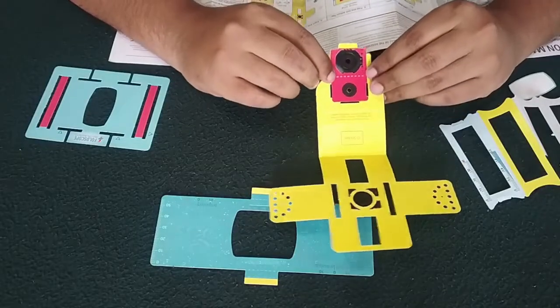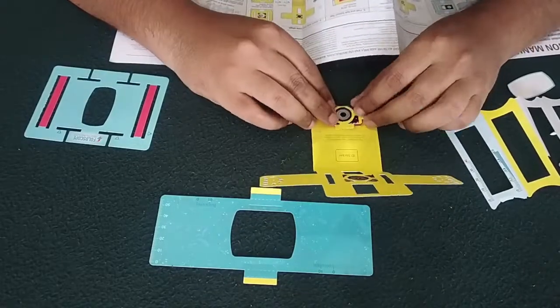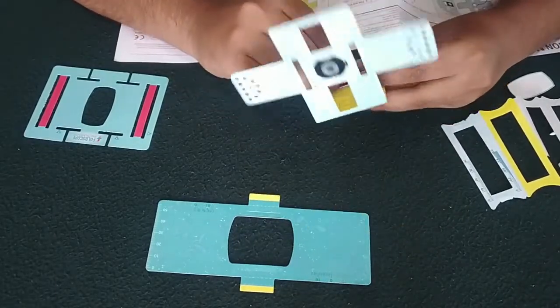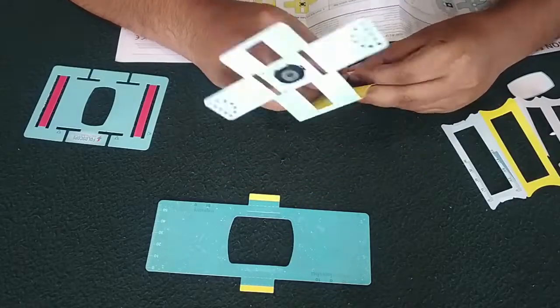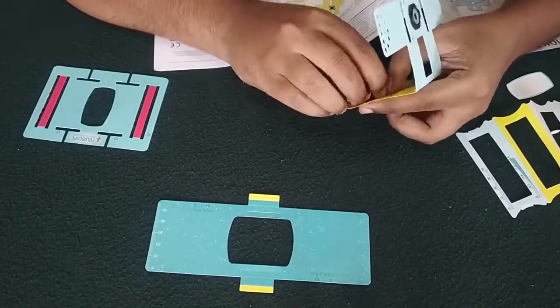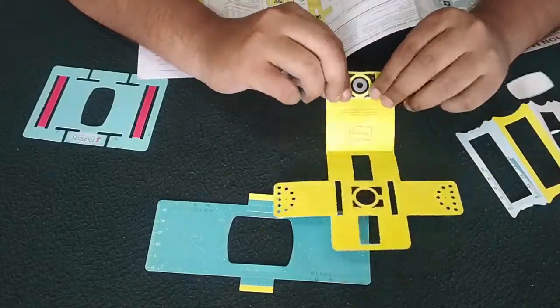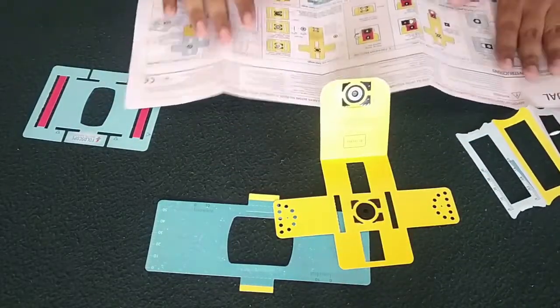Now we need to fold this along the dotted lines, and insert this part through this, and insert this part through this. Now the next step.